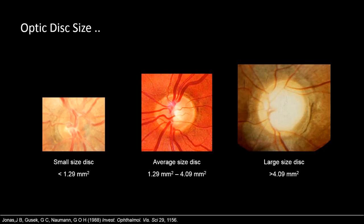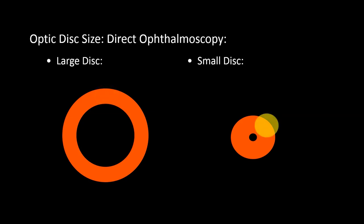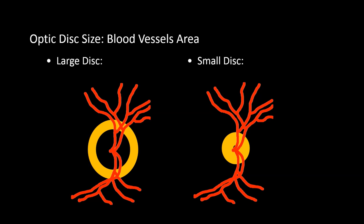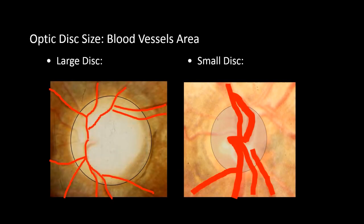If the optic disc is very small (a microdisc) or very large (a macrodisc), one should think of systemic associations which may be linked to the size of the optic disc. You may also avoid mistakes due to an abnormally large optic disc when interpreting OCT findings. An easy way to estimate disc size is to use the 0.5 mm light spot in the direct ophthalmoscope and move it around the optic disc. In a large disc, the light spot will move around to cover the entire area; in a small disc, you may not need to move at all. Another way is to compare the size of blood vessels to the overall area they occupy — in a large disc they occupy a smaller proportion of the surface.